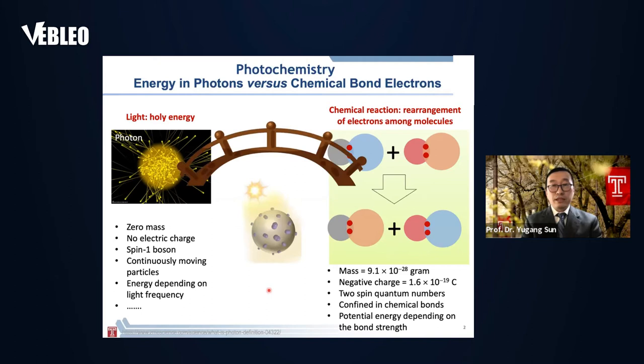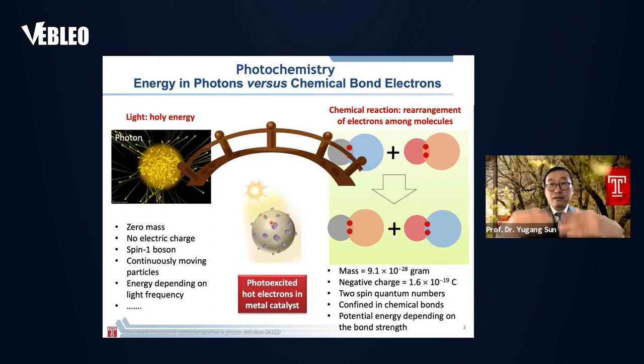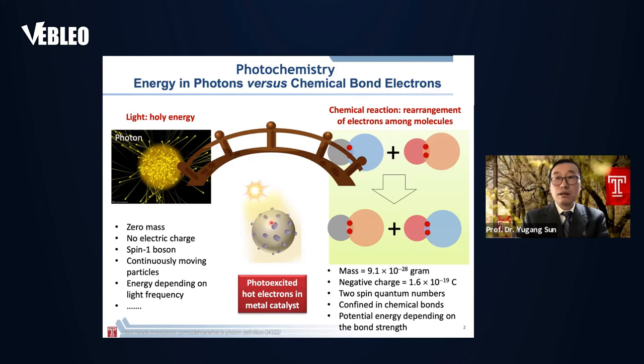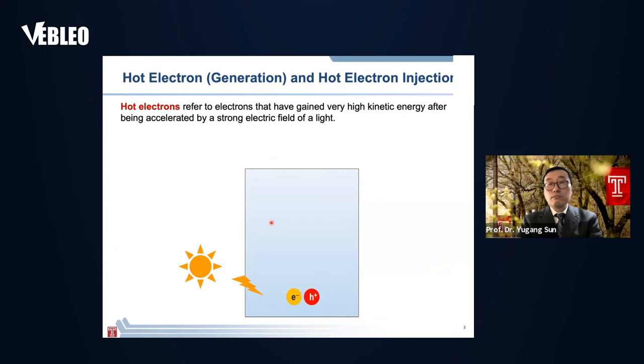One way is to use objects which have high density of electrons — such as metal nanoparticles, which have very high density of free electrons — as a mediator to bridge them. When we use metal nanoparticles, which can strongly absorb light, the free electrons in the metal nanoparticles can be excited and elevated to high energy levels. We call these excited electrons hot electrons.